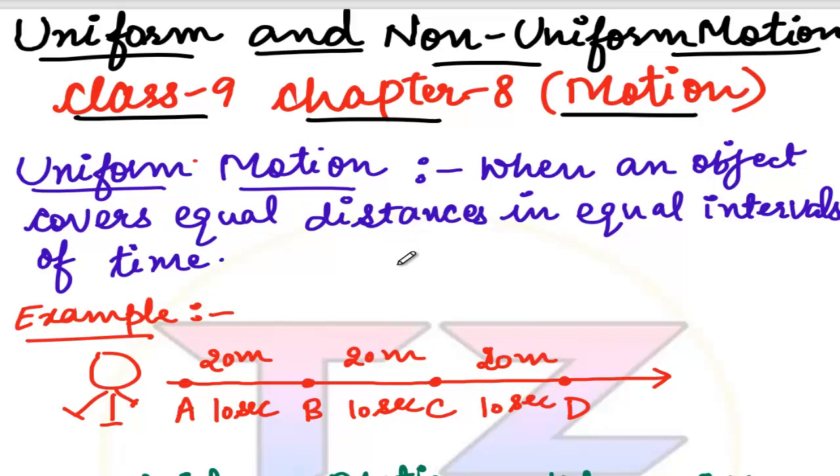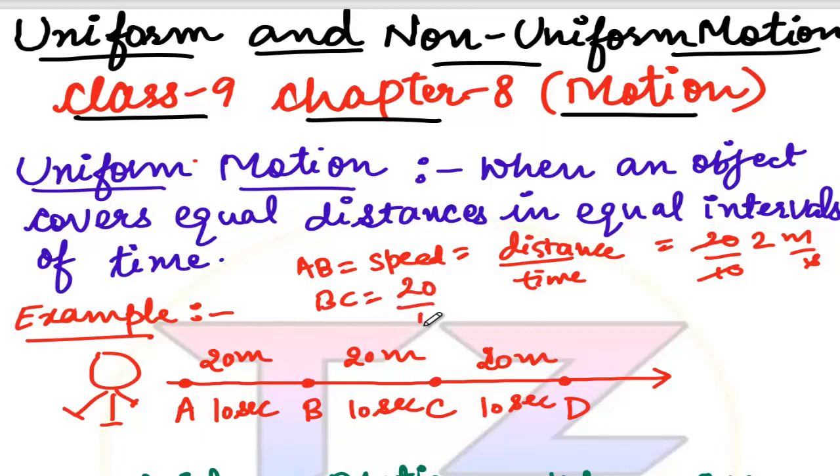In uniform motion, we will find out the speed. First we will see A to B, so speed is distance upon time. The distance is 20m and time is 10s, so we get 2m per second. Similarly for B to C, distance is 20m and time is 10s, which gives 2 meter per second. Same way C to D, 20 divided by 10 gives 2 meter per second. So in the overall journey that you cover, the speed remains constant at 2 meter per second. This type of motion is called uniform motion where an object covers equal distance in equal intervals of time.